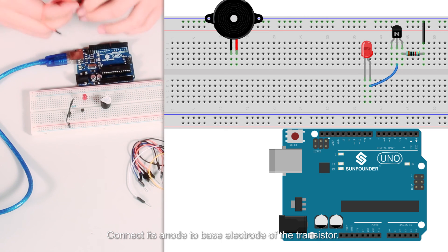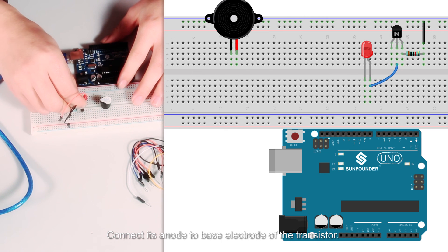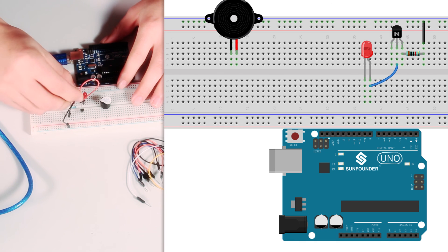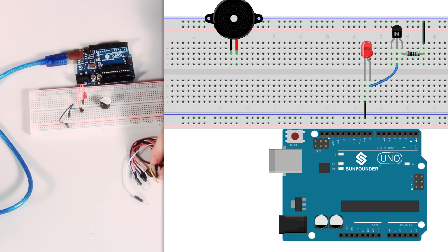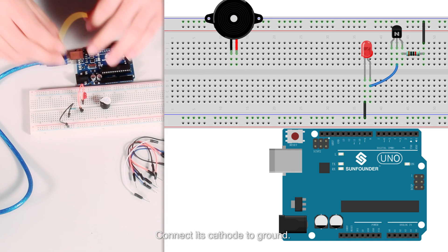Connect base electrode of the transistor. Connect its cathode to ground.